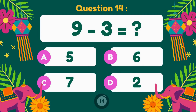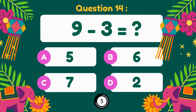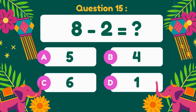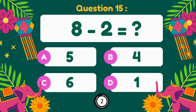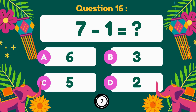9 minus 3. 9 minus 3 equals 6. 8 minus 2. 8 minus 2 equals 6. 7 minus 1. 7 minus 1 is 6.